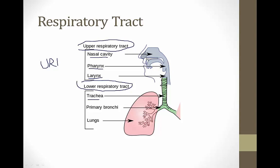The lower respiratory tract includes the trachea, the pulmonary bronchi, and the lungs. We don't often refer to things as a lower respiratory tract infection; usually we say the patient has bronchitis or pneumonia.